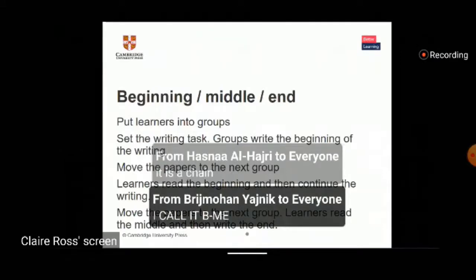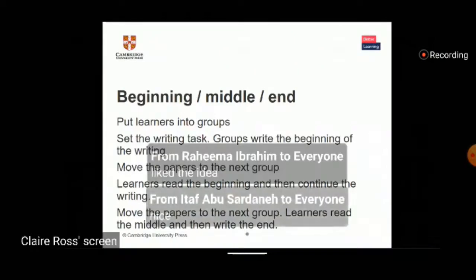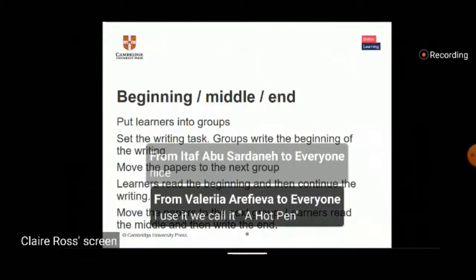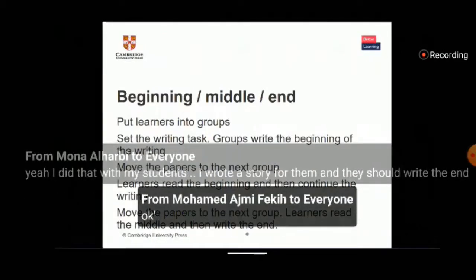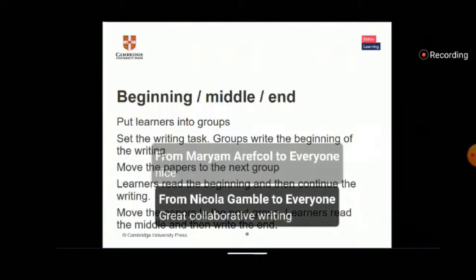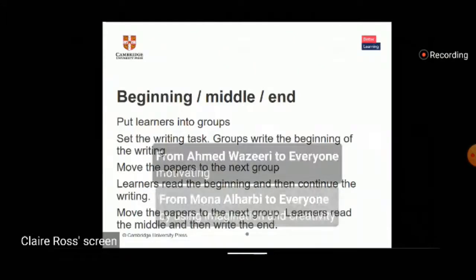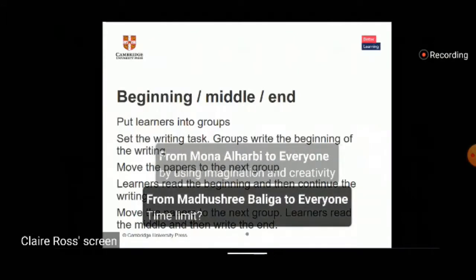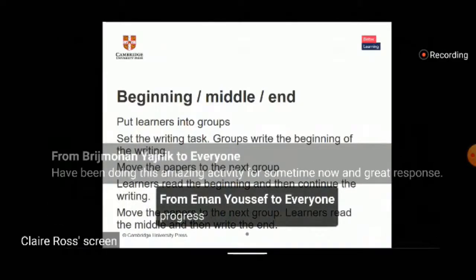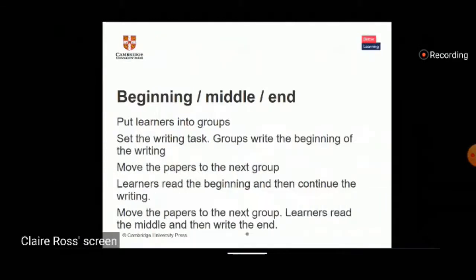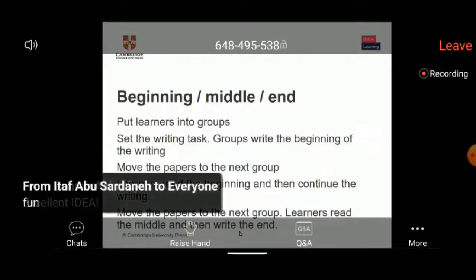A clarification: what are other groups doing while they're waiting? Everybody is writing at the same time. If you have five groups, everybody writes the beginning, then you move the papers and everybody writes the middle of a different piece of writing, then you move them again and everybody writes the end. So everybody has written a real collaborative piece of writing.